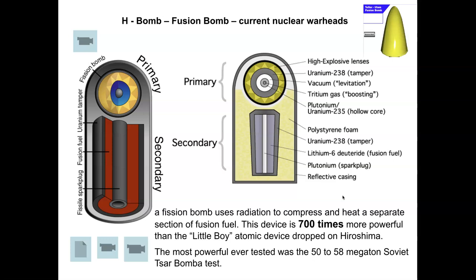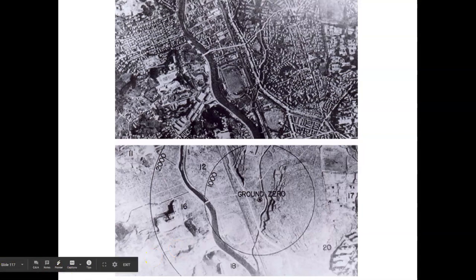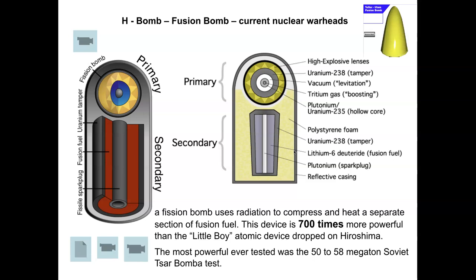Today we have bombs 700 times more powerful than those atomic devices — these are fusion bombs, or hydrogen bombs (H-bombs). They're more powerful because they use nuclear fusion, which releases a greater amount of energy. The key design challenge: fusion requires tremendous energy to push nuclei together. So our current H-bombs are named for hydrogen — light nuclei, usually hydrogen isotopes — used in the fusion stage.